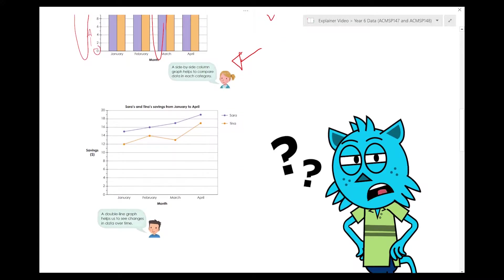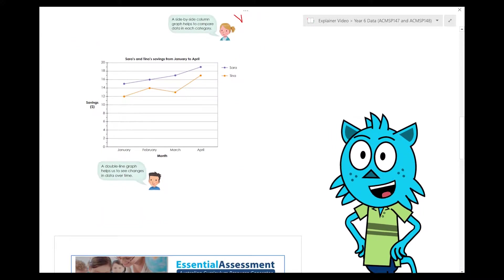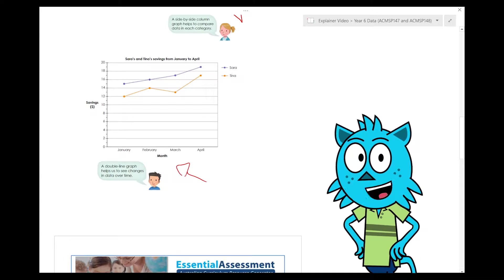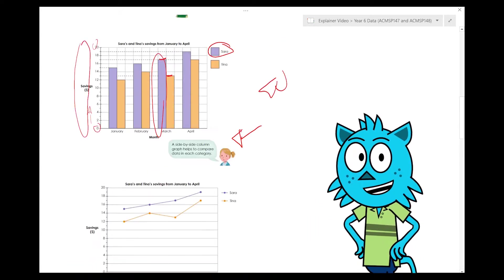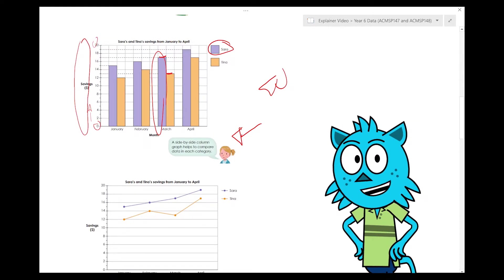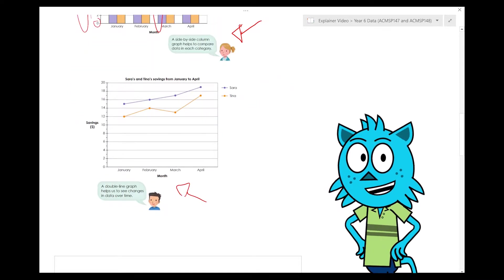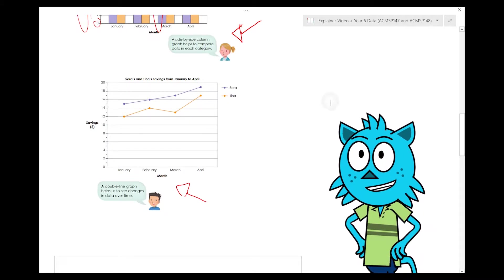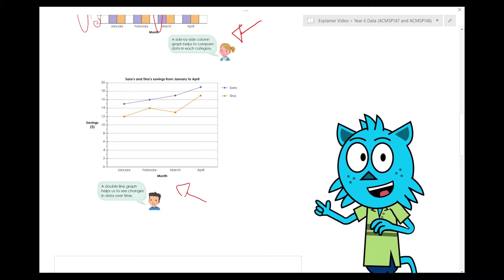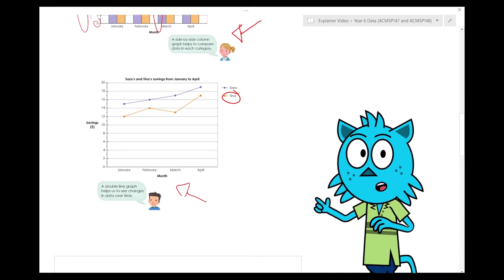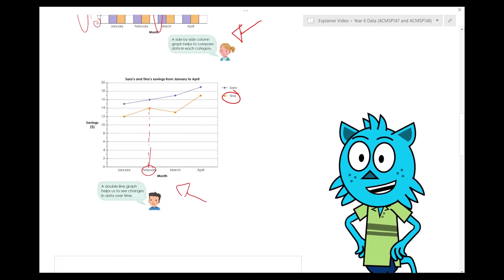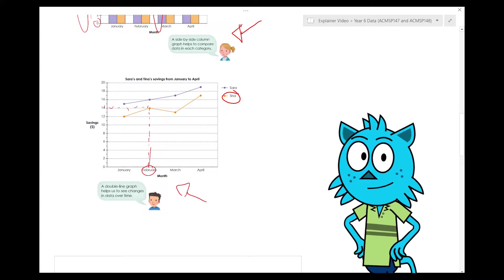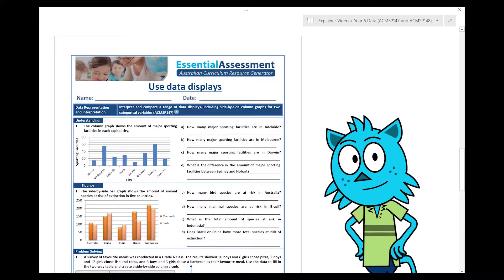And here's one more example of what we call a double line graph, which is just a line graph, but very similar to our double, our side by side column, where it's just showing two bits of information on the one. And I look at this the same. So if I want to see how much Tina made in February, I could just look at February and look up to my dot that's over here and then look across and see that that goes to 14. So I can see that she made $14 or she saved that in February.